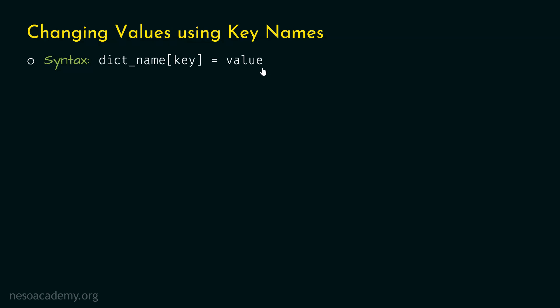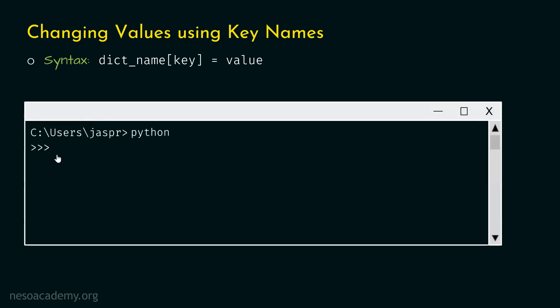Let's see with the help of an example how to update a specific value using its key. Let's open our command prompt and activate the Python interactive shell. Now, let's create a dictionary called car. In that car dictionary, we will add two key-value pairs: brand Audi and model Q7.